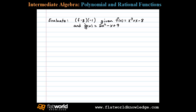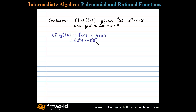Here we're asked to evaluate f times g of negative 1, given f of x and g of x. Let's begin by finding f times g of x. Now f times g of x is defined to be f of x times g of x, and so in this case we have f of x which is x cubed plus x minus 8, times g of x which is 2x squared minus x plus 9.